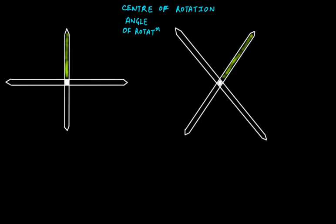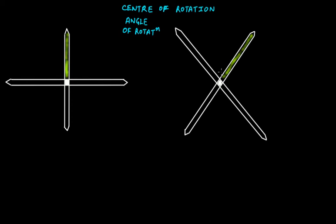So I rotate this with 45 degrees and we get this. I colored this arm green so you can notice the movement of these arms. Now since I rotated this with 45 degrees, every arm will move by 45 degrees. Is this current position exactly the same as the original? No — here two arms are upward and downward, one right and one left, but in this case it's completely different.